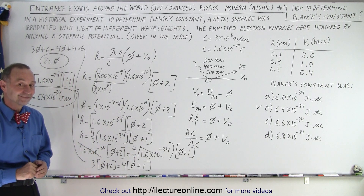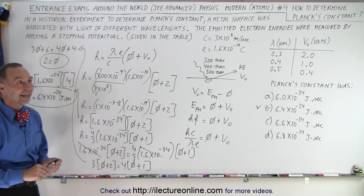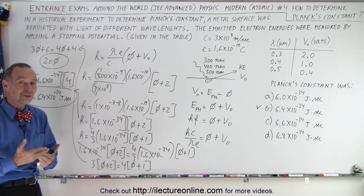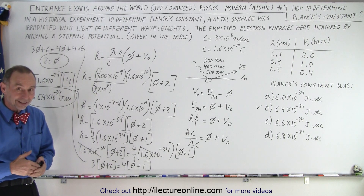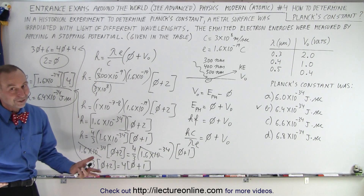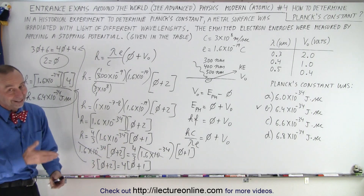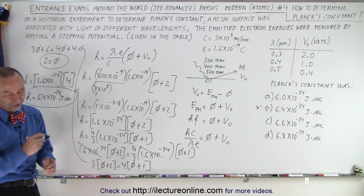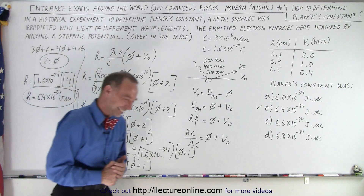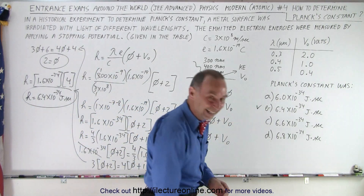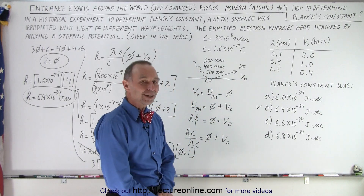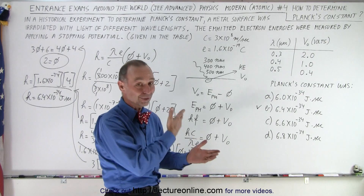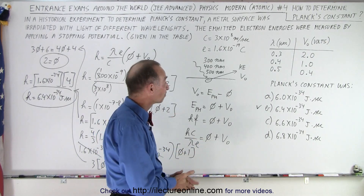Regarding h-bar: in quantum mechanics Planck's constant is divided by 2 pi so often that a new constant was defined — h divided by 2 pi — called h-bar. As for using the third data point at 500 nanometers with 0.4 volts, you don't need it. Two equations are enough to solve the system, so we're done once we use the 300 nm and 400 nm cases.